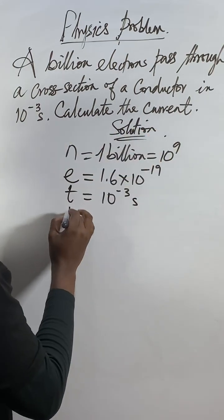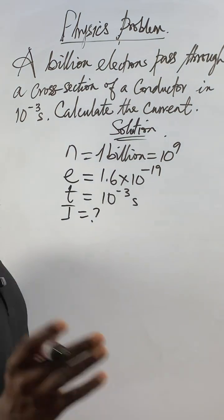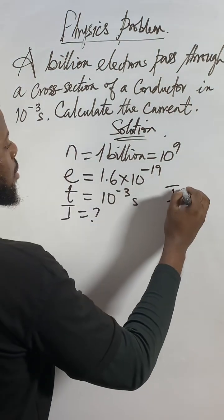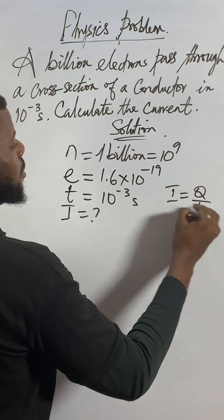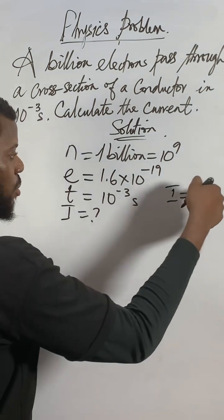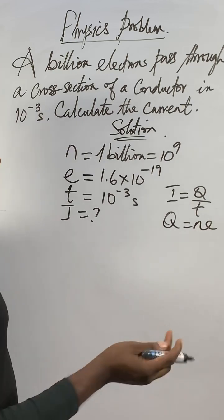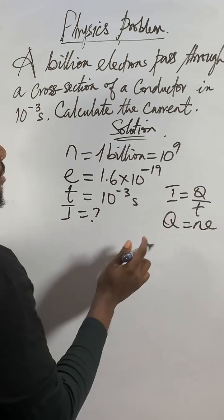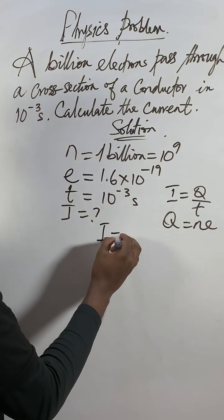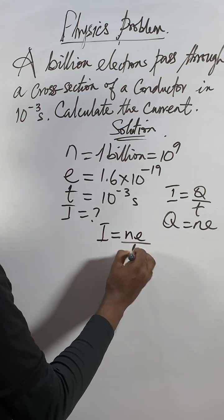Calculate the current, the current you don't know. So which formula connects this? I know I equals Q over T. The Q itself equals number of electrons times e. So if you carry this and replace it, you get I equals ne over T.